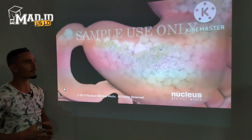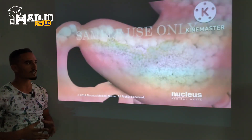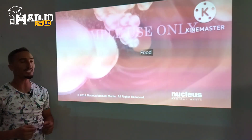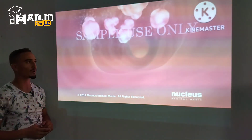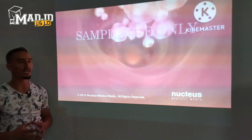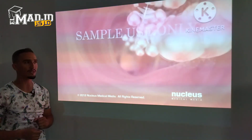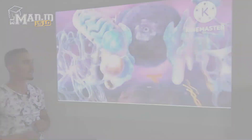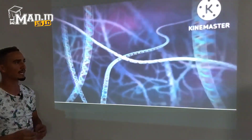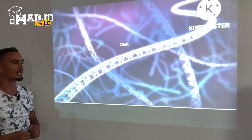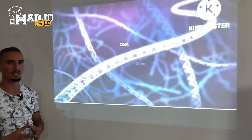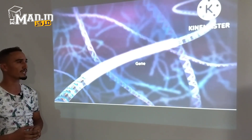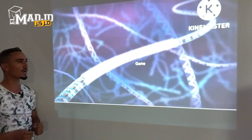Our bodies cannot use the food as it is when it enters our digestive system. The process of chemical digestion uses different proteins and enzymes to break down food particles into usable nutrients our cells can absorb. Where are the instructions to manufacture these and all the different types of proteins we need to stay alive? The instructions to make a protein are contained in our DNA. DNA contains genes.